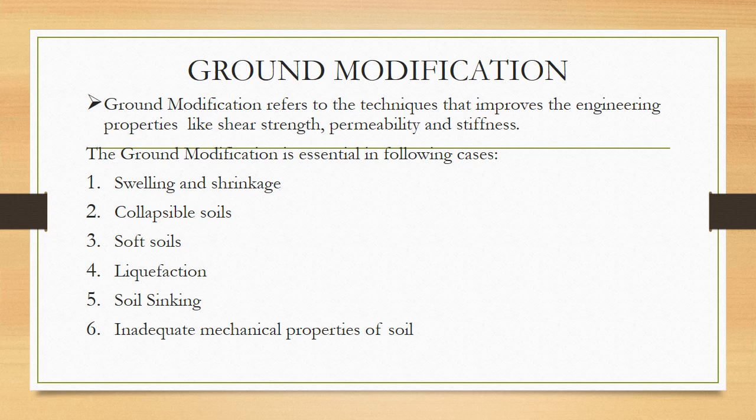Why is ground modification essential? Ground modification is essential in order to avoid the settling and shrinkage of soils, to improve the strength of collapsible soils, to improve the properties of soft soils, to avoid liquefaction, to avoid the phenomena of soil sinking, and in general, to improve the mechanical properties of soil.